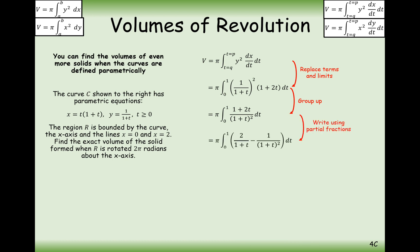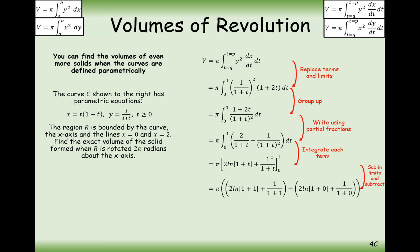Integrating by partial fractions: the first term gives a natural log integral, and the second gives 1/(1 + t) via substitution. Substituting in the limits — putting t = 1 in first, then subtracting t = 0 — the expression simplifies to pi times (2 ln 2 − 1/2). That is the volume of this revolution.